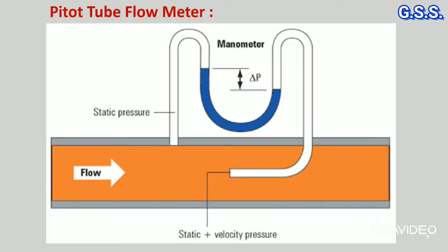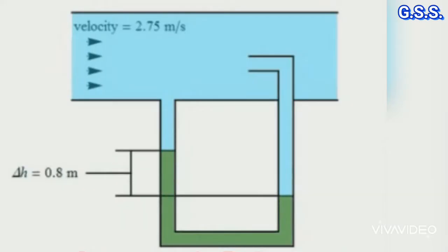Pitot tube measures the differential pressure between total pressure and static pressure. This differential pressure is directly proportional to velocity squared in the pipeline, and this differential pressure is used to measure volume flow rate. In pitot tube, pressure is generated in a tube facing the flow by the velocity of fluid.